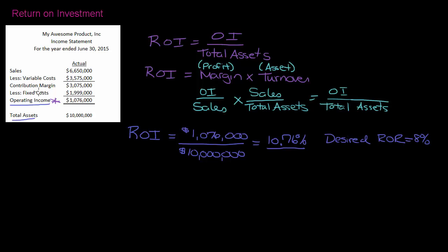Profit margin, my margin is operating income over sales. So if I do that calculation, that is 1,076,000 over 6,650,000. So essentially what this ratio does is it tells me the percentage of each sales dollar that is going to become profit. So in this case, if I do the math on this, this is 16.81%.